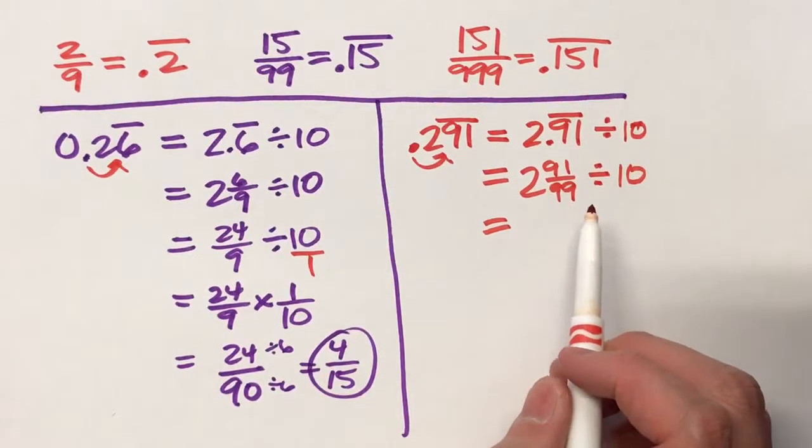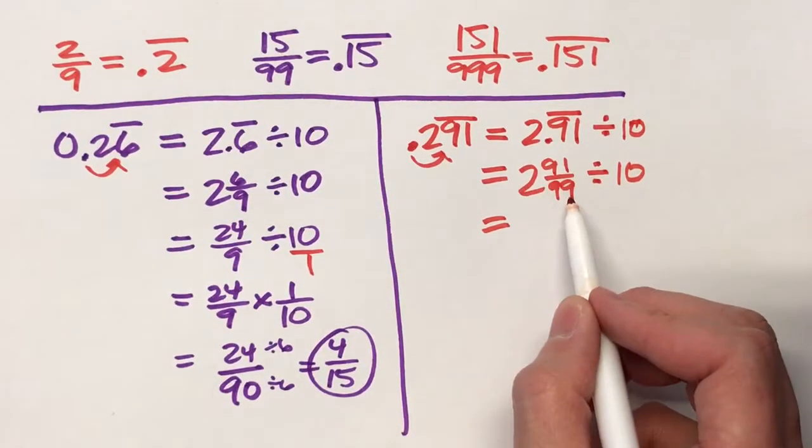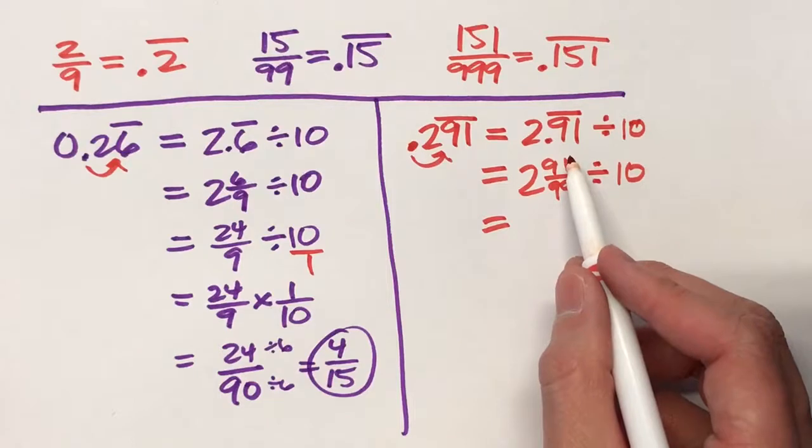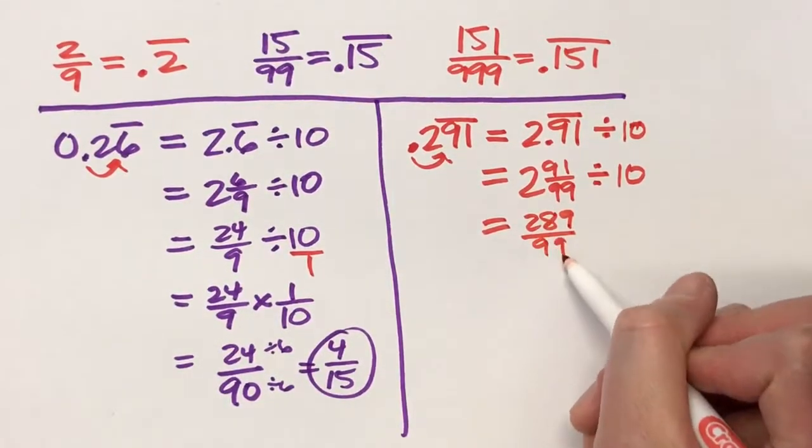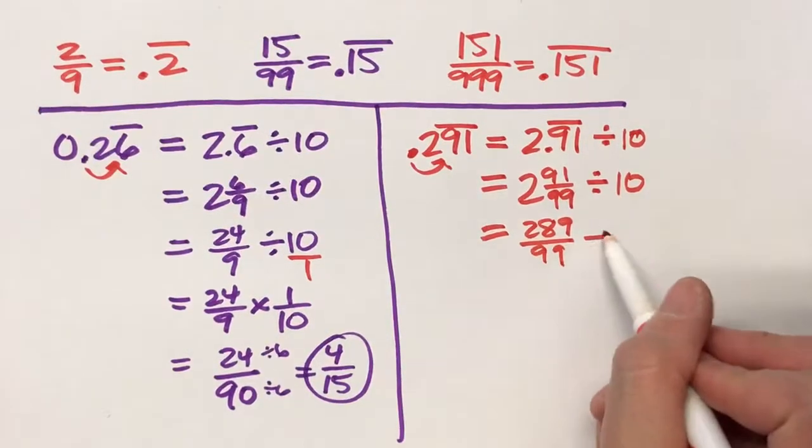This is a mixed number. I need improper. So 2 times 99 plus 91, 289/99ths. Drop down the divide by 10.